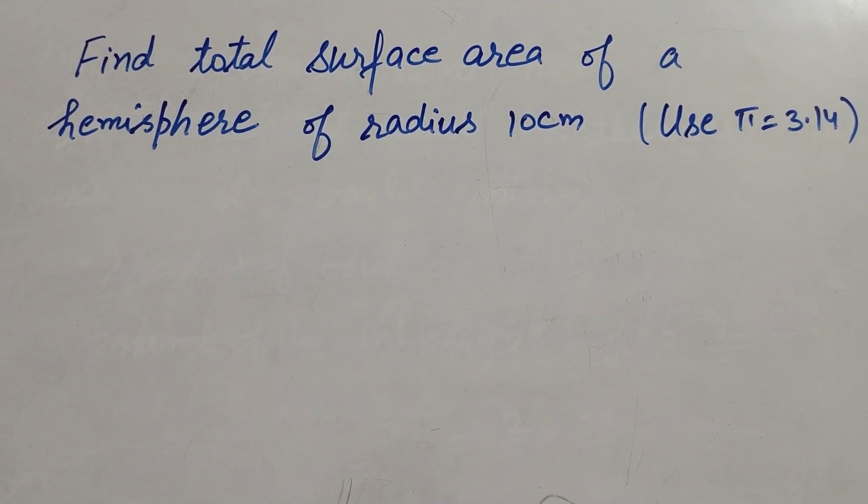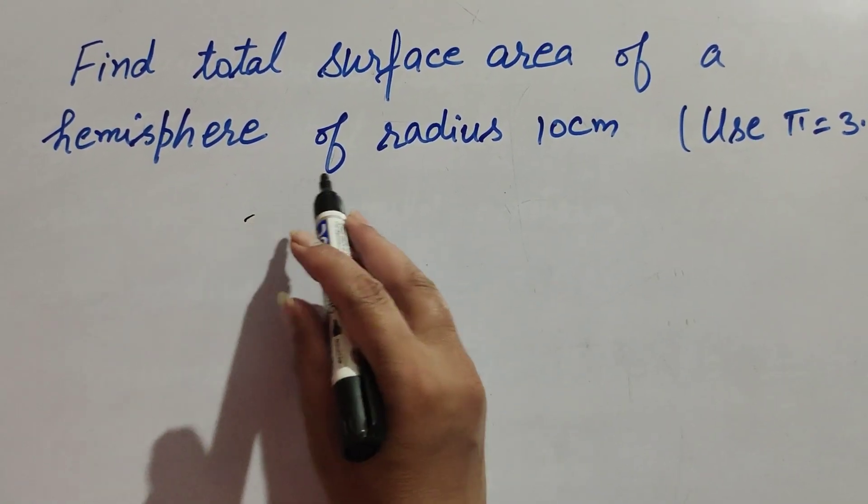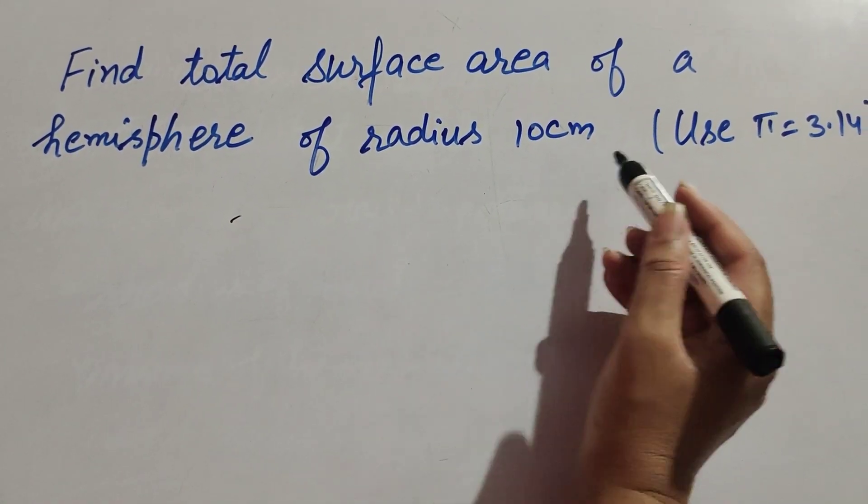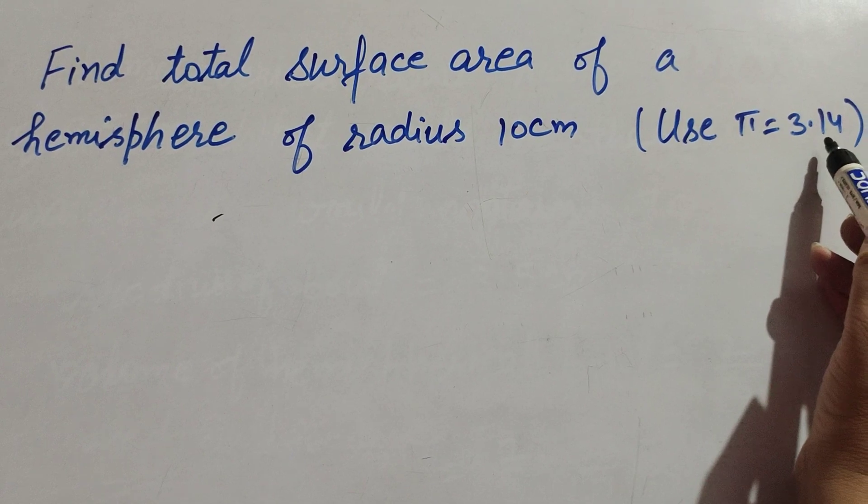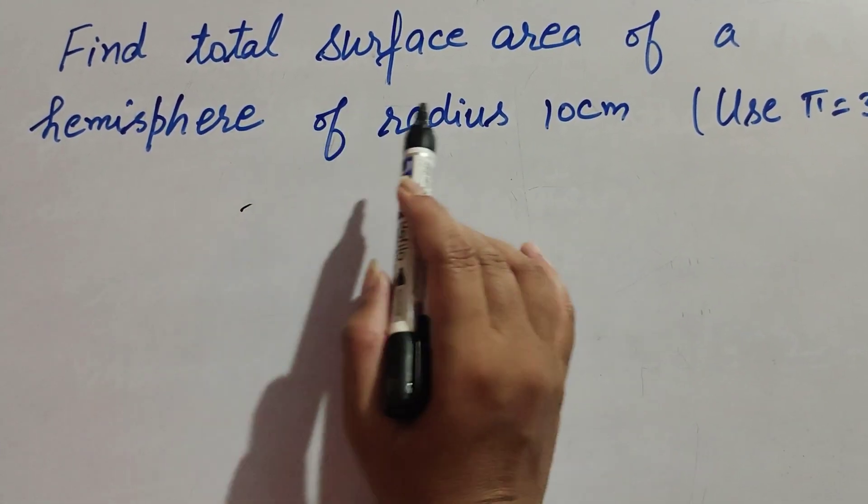Hello friends, welcome to my channel. In this video we find total surface area of a hemisphere of radius 10 centimeter. Use π = 3.14.